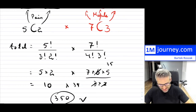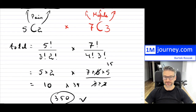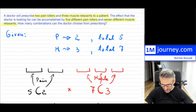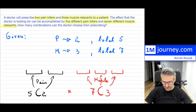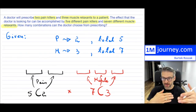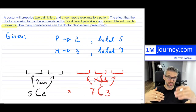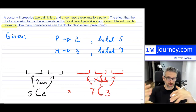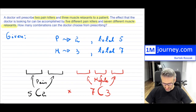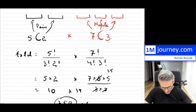Because order is irrelevant, we use combinations. It doesn't matter in which order you give the medications. If the order of prescribing mattered — painkiller first, then muscle relaxant, and so on — then we'd use permutations. But here we're just prescribing them, so combinations apply.